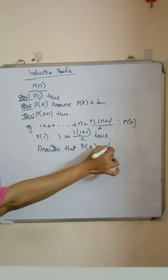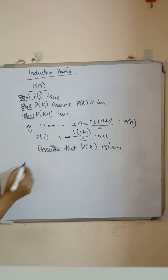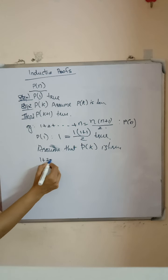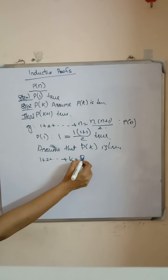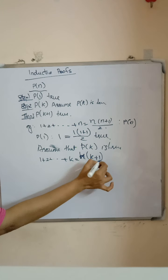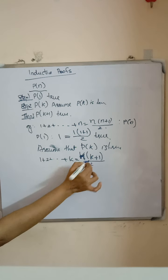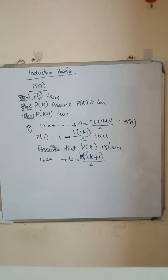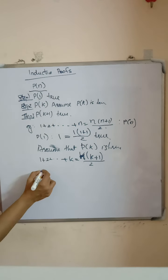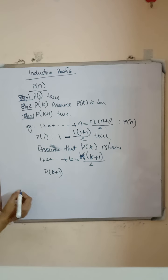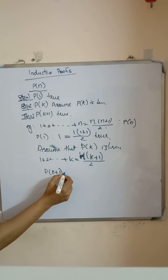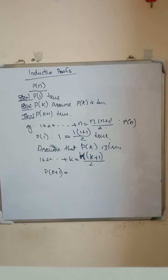Then assume that P(K) is true. That is, 1 + 2 + ... + K = K(K+1)/2.